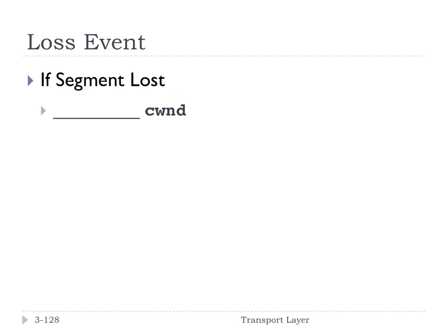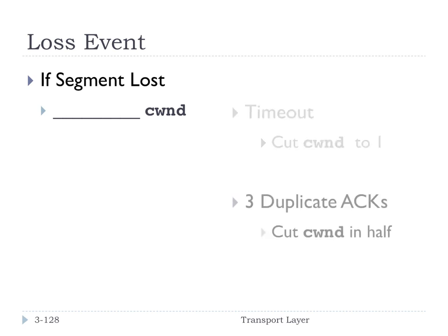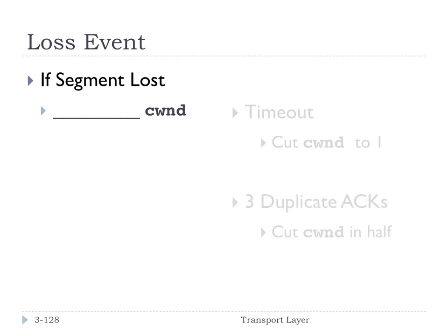If there's a loss event, we decrease the congestion window. We consider two different loss events. One is a timeout — meaning the transmission timeout expired — and in that case we do something drastic: we cut the congestion window to one MSS. This puts us back in slow start mode. In contrast, a triple duplicate ACK means we cut the congestion window in half. So instead of going to one, we cut it in half — not as drastic, but still significant.